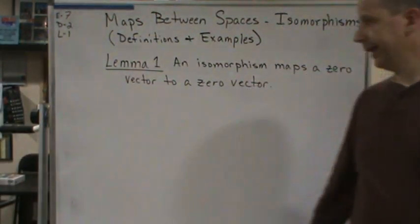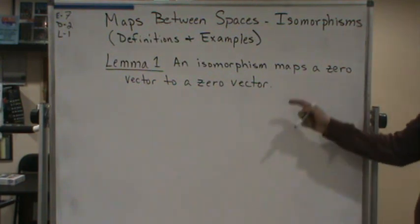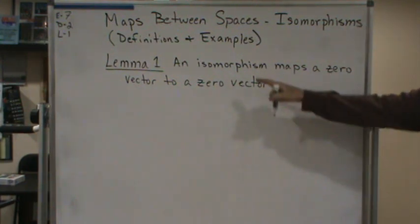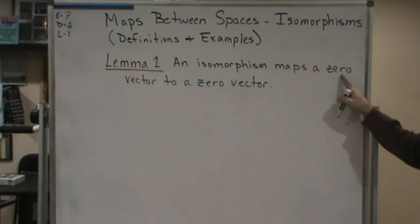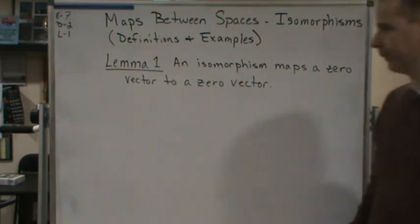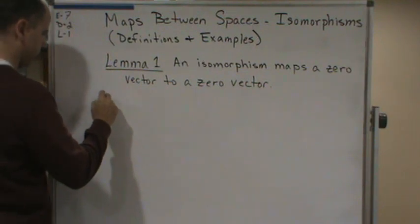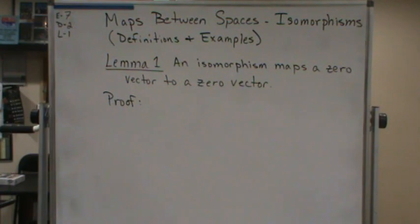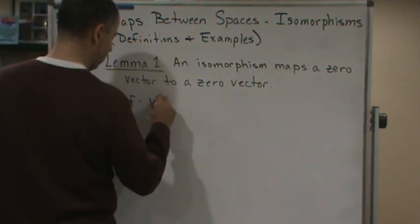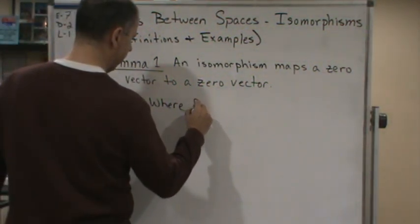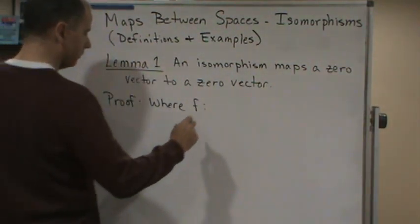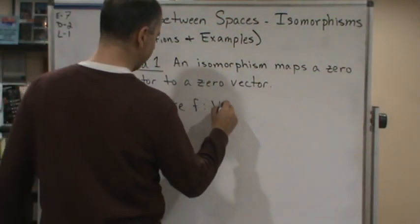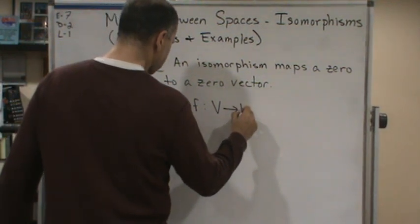This is Lemma 1 and it says an isomorphism maps a zero vector to a zero vector. The proof is pretty straightforward. So we start with the isomorphism where F from V to W